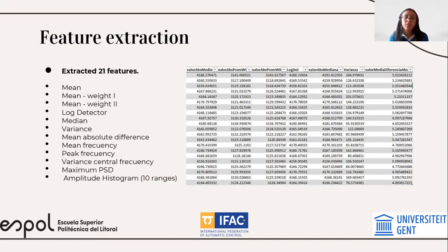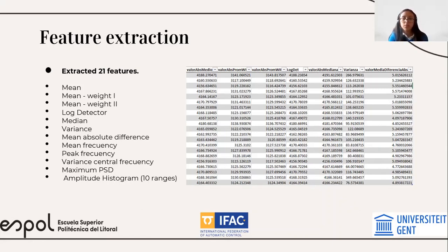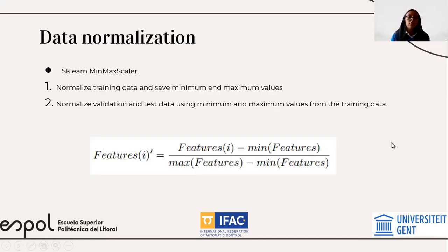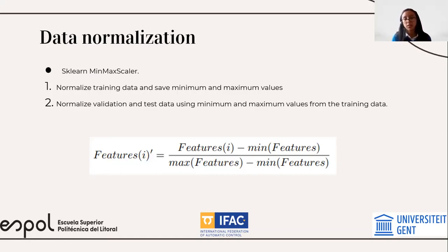We then extracted features — exactly 20 features. The feature extraction CSV file would look something like the image shown. We used several features like mean, median, variance, peak frequency, mean frequency, amplitude histogram, etc. For data normalization, we used scikit-learn's MinMaxScaler. First, we normalized our training data and saved the minimum and maximum values. Then, with those minimum and maximum values, we normalized the validation and testing data.